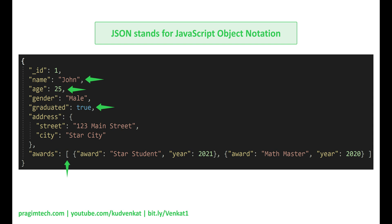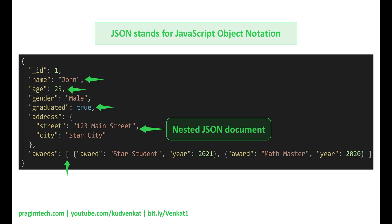A field value in a JSON document can also be another nested JSON document. In this example, the address field value is another JSON document with its own set of fields and values — so address is an embedded JSON document. There is a one-to-one relationship between student and address. To model this in a relational database, we may have two tables. To retrieve data, we have to join and query both tables. In MongoDB, we have the entire data in one document — there is no need for expensive join operations.